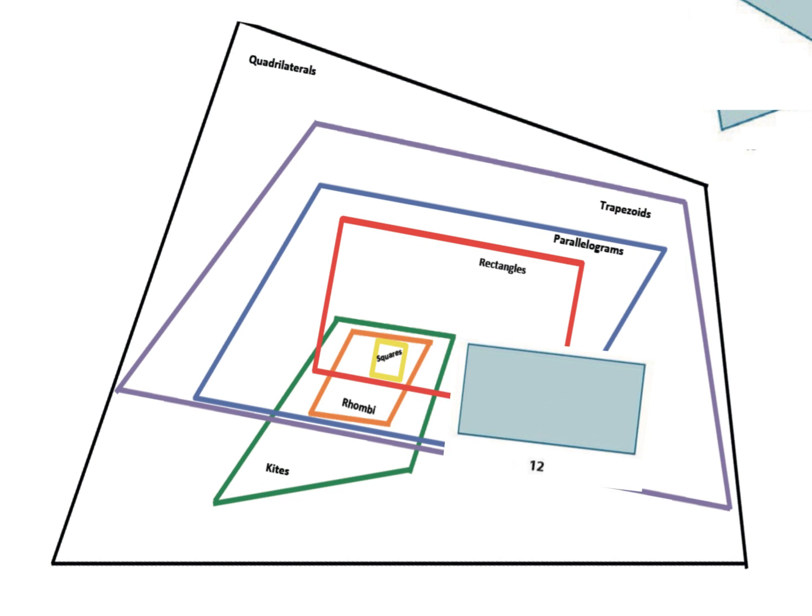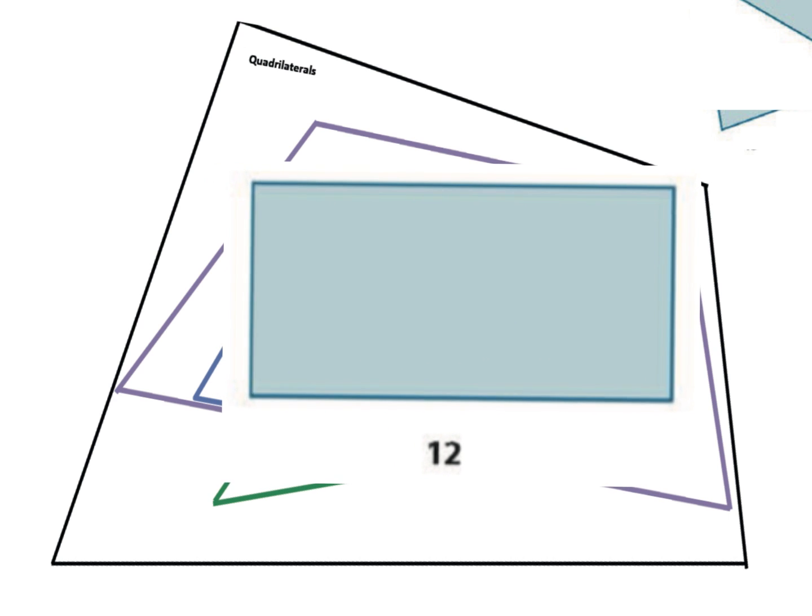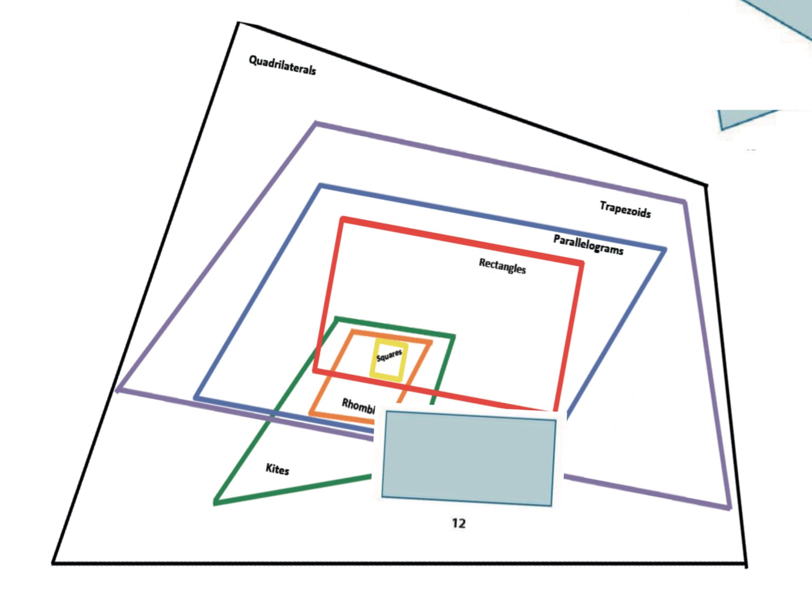So teachers or parents, what you could do is you could say, well, what is this? And your students might say, well, it's a rectangle. And you'd say, okay, where would it go? Oh, it goes right here.